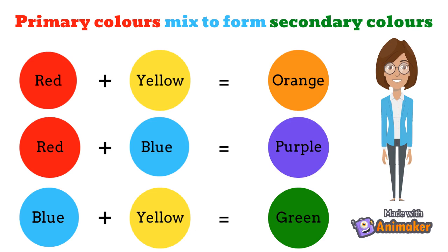Let us see how secondary colors are formed. Primary colors mix together to form secondary colors. Red and yellow mix to form orange, which is a secondary color.